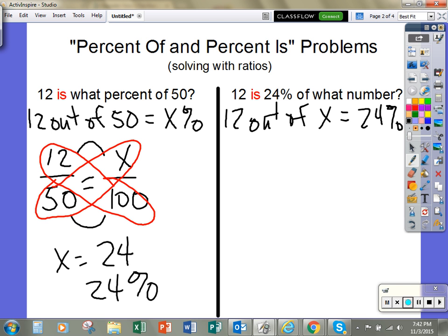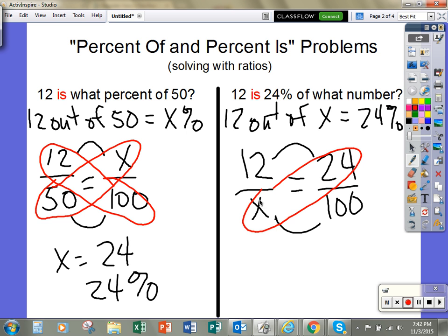Now, when I write it like that, I would have 12 over x because I don't know what number it is out of. And I would write 24 percent as 24 hundredths. And again, I would solve the same way. I would either find a way to divide to make an equivalent ratio or I would cross multiply and solve for x. And either way, I would get that x equals 50.